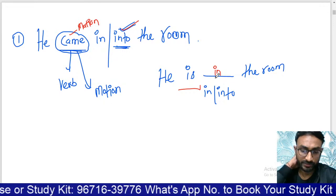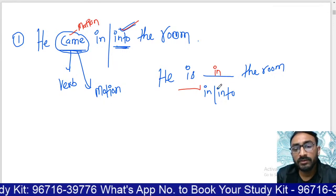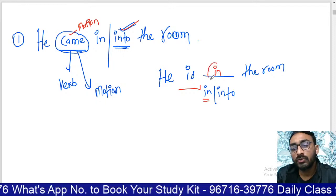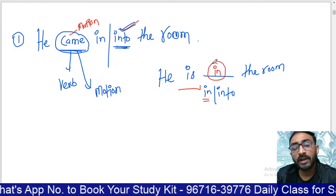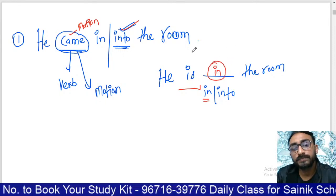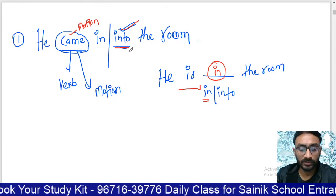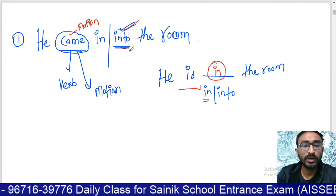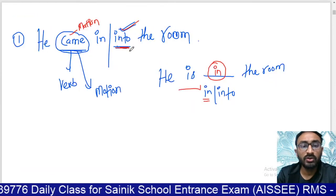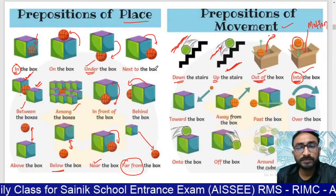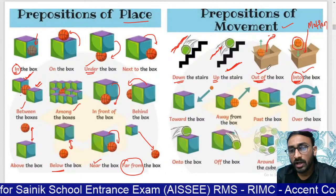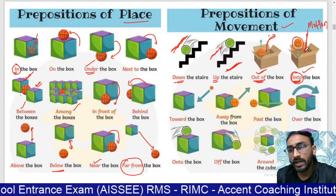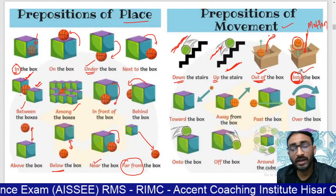'In' means at a position (no motion), and 'into' means motion. In this case motion is given, so we write 'into.' You also learned 'out of' and 'into' — the ball is going inward into the box, so we write 'into.' If something is going towards the box, 'towards' means 'ki taraf' — going in the direction of something.